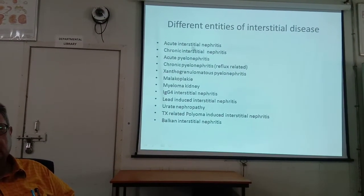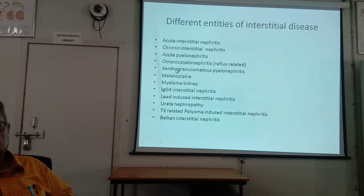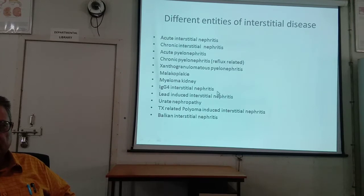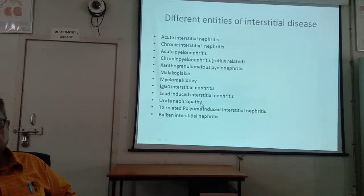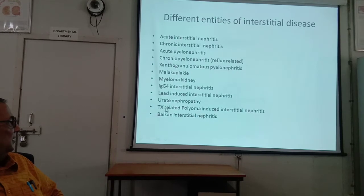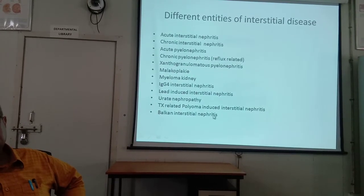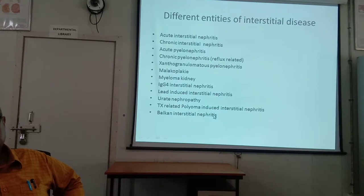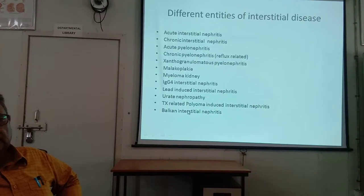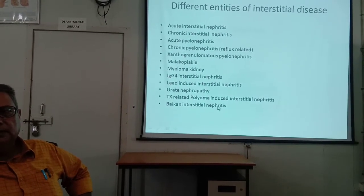Different entities of interstitial disease include acute interstitial nephritis, chronic interstitial nephritis, acute pyelonephritis, chronic pyelonephritis, xanthogranulomatous pyelonephritis, malacoplechia, myeloma kidney, IgG4 interstitial nephritis, lead-induced interstitial nephritis, urate nephropathy, tumor-related and polyoma-induced interstitial nephritis. Balkan interstitial nephritis is common in Balkan countries such as Bulgaria and is a familial disease.